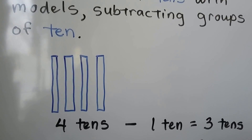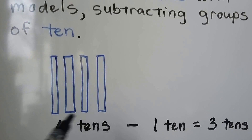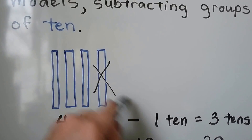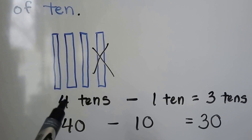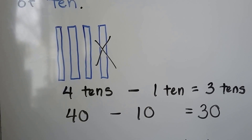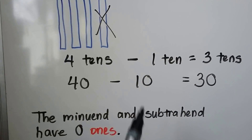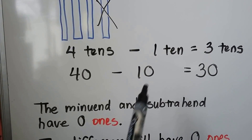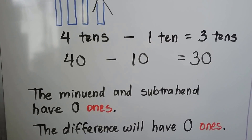Four tens minus one ten — we can draw rods of ten, and if we're taking away one ten we can cross it off. It's going to equal three tens. Forty minus ten is equal to thirty. The minuend and the subtrahend have zero ones; there are zeros in the ones place, which means the difference will also have zero ones.